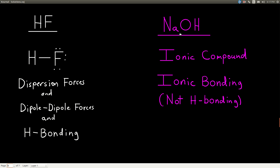Sodium hydroxide is an ionic compound — you can tell because there's a metal and a nonmetal, or a cation and an anion. The anion is a polyatomic ion, hydroxide (OH minus), and the cation is sodium. So there's ionic bonding, and that's all we really care about here.